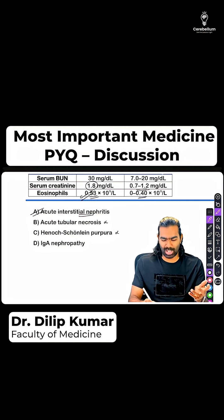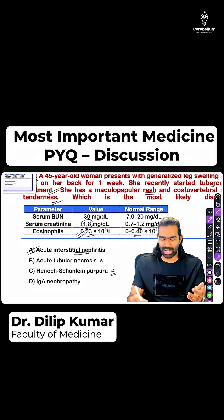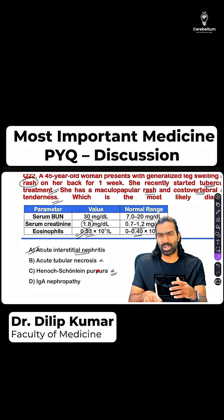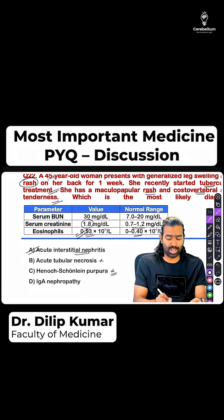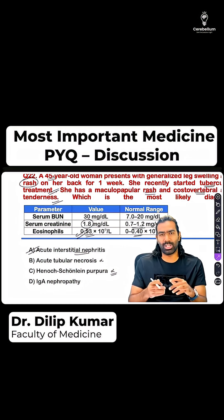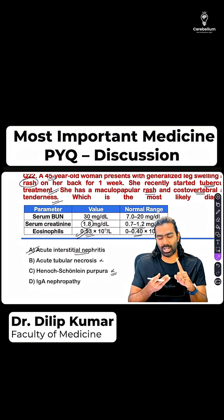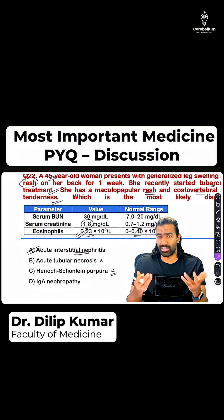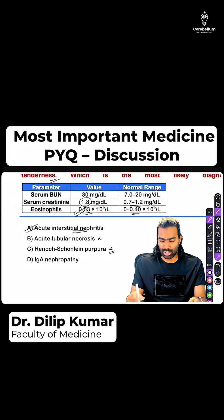HSP is not the diagnosis — it's just to confuse you because of the rash. HSP is going to come with palpable purpura, and it's very common in children and adolescents less than 20 years, not in a 45-year-old. It's going to come with the classic triad of GI involvement, arthritis or arthralgia, and palpable purpura.